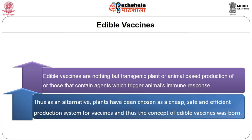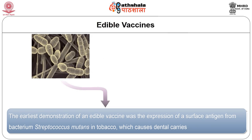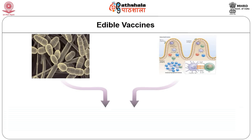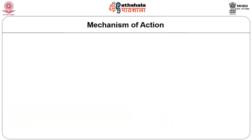Edible vaccines may be defined as plant or animal-made pharmaceuticals. The earliest demonstration of an edible vaccine was the expression of a surface antigen from the bacterium Streptococcus mutans in tobacco, which causes dental caries. Scientists found that the bacterial antigen could stimulate the mucosal immune response, which would prevent the bacteria from colonizing the teeth and therefore protect against tooth decay.